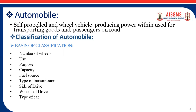The next classification is based on purpose. Some are passenger vehicles and some are goods-carrying vehicles. Those vehicles which carry passengers include buses and cars, while goods-carrying vehicles include trucks.